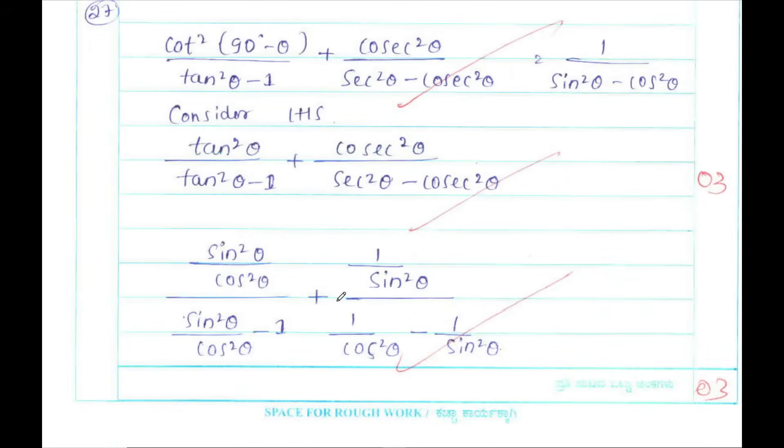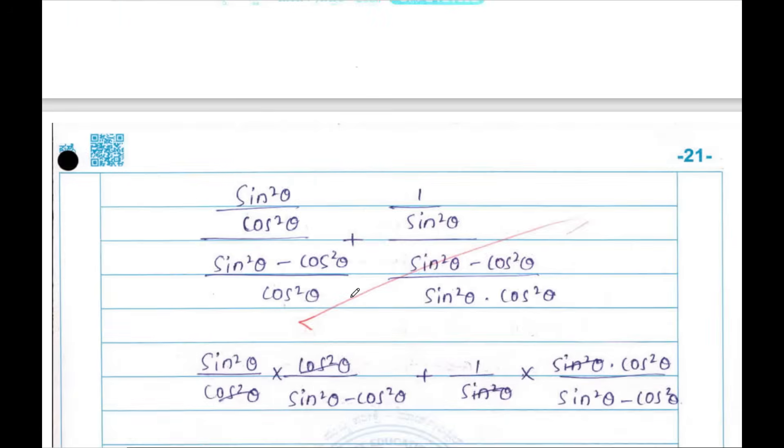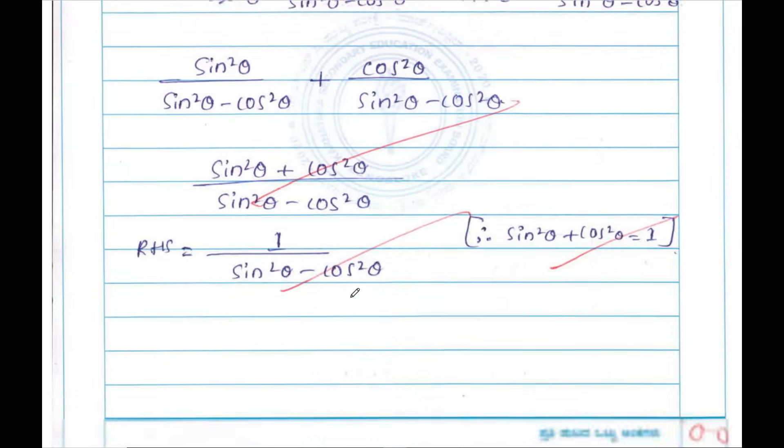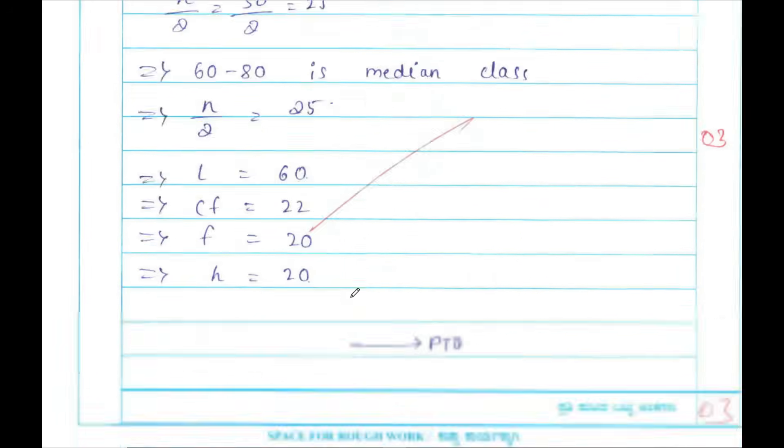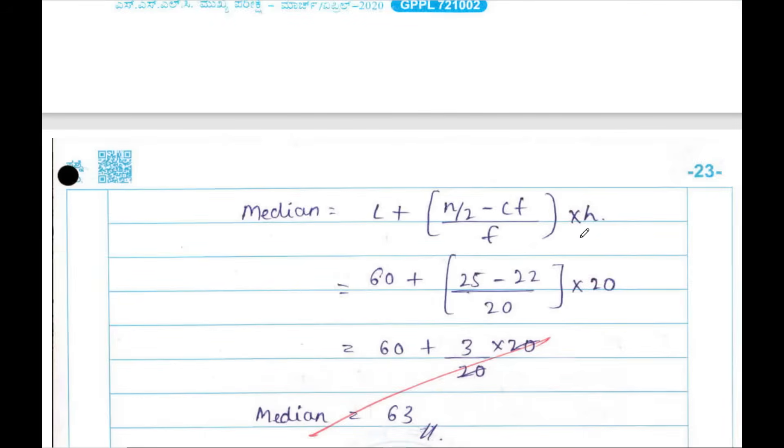Students, in 'or' questions, whichever question you feel easy, try to attempt that. At the end, if you have time, you can write the other question also. In case of out of two questions, if you have written any one question, the other question will not be considered for evaluation. Try to write the formulas and try to put it in the box.